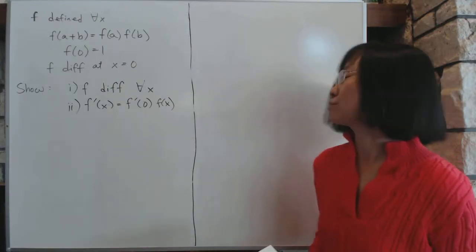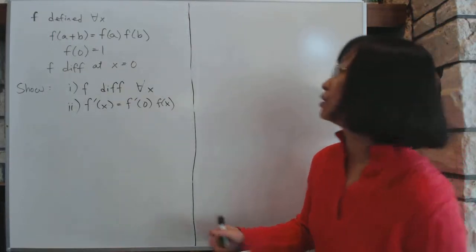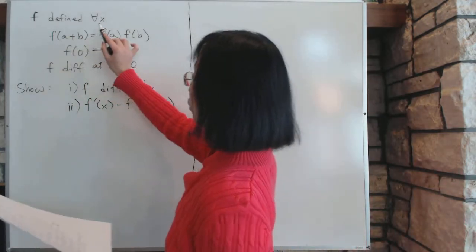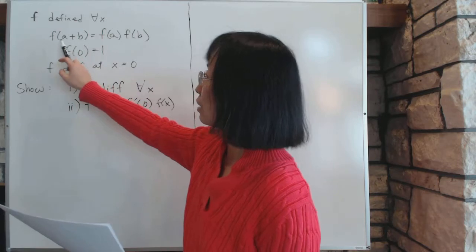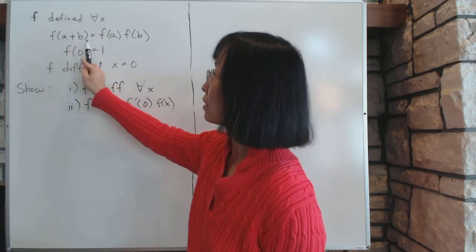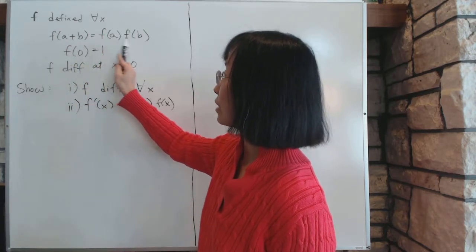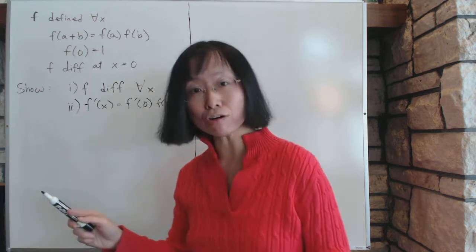Section 1.1, Derivatives. We're going to do yet one more example. Now f is defined for all x. f has a particular quality: f(a+b) equals f(a) times f(b), and that's true for all a, b.